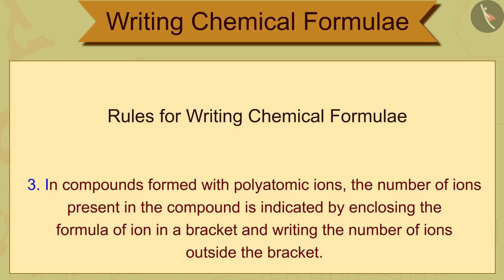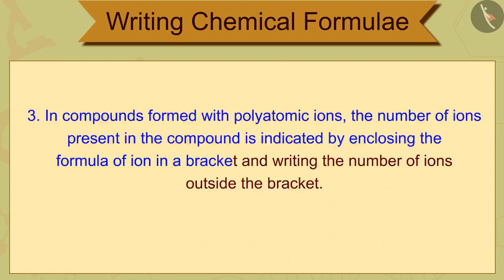Rule 3: In compounds formed with polyatomic ions, the number of ions present in the compound is indicated by enclosing the formula of ion in a bracket and writing the number of ions outside the bracket. For example,